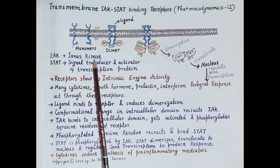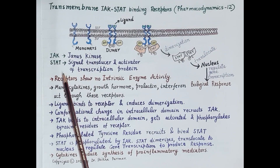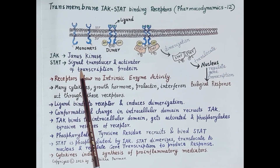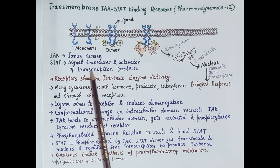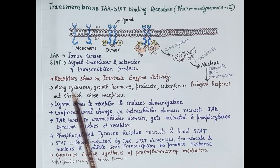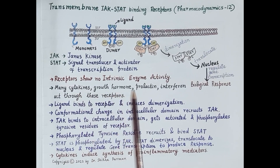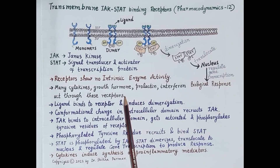JAK refers to Janus Kinase — it is a protein and an enzyme found moving freely in the cytoplasm, so this is a cytosolic tyrosine protein kinase. STAT refers to Signal Transducer and Activator of Transcription protein — it is another freely moving protein in the cytoplasm. Many cytokines, growth hormone, prolactin, and interferon act through these receptors, meaning these are the ligands for transmembrane JAK-STAT binding receptors.